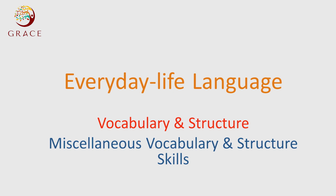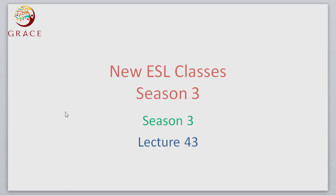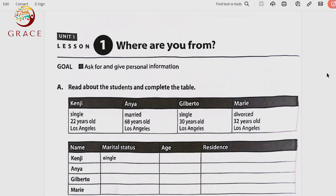We are still focusing on vocabulary and structure skills. We are completing how to get information from a table, a schedule, or a form, and how to add information into a table or a schedule or a form. For example, a registration form — first and last name, address, phone number, age, date of birth, today's date, whatever.